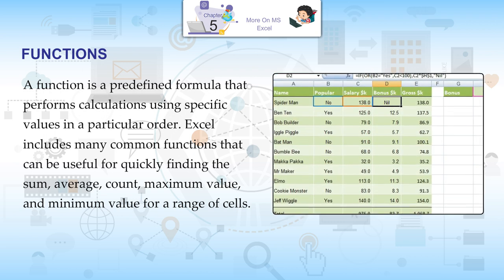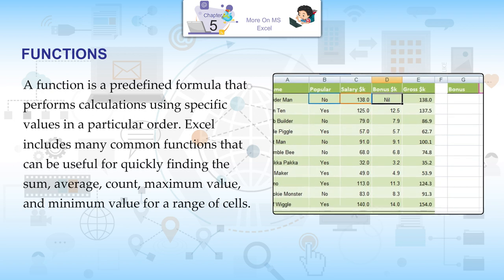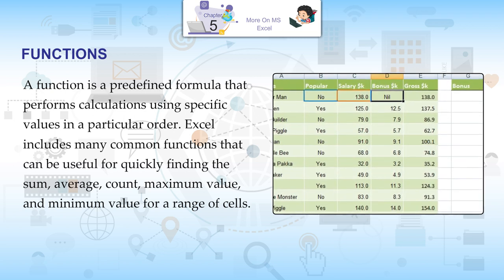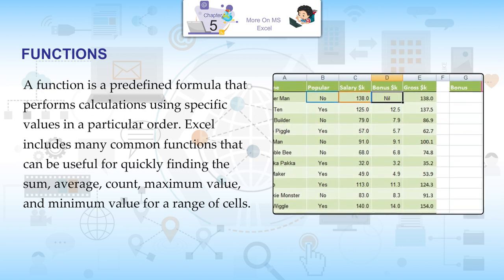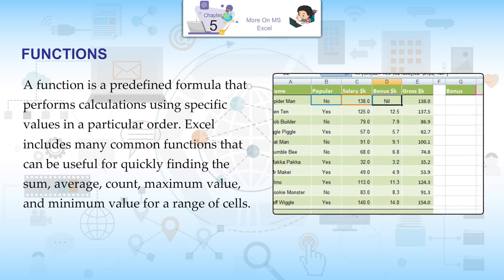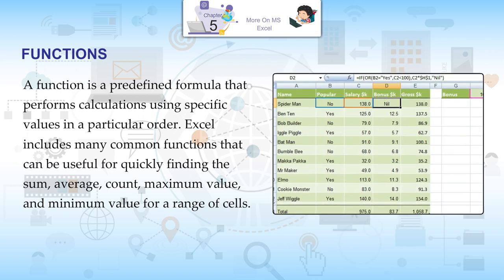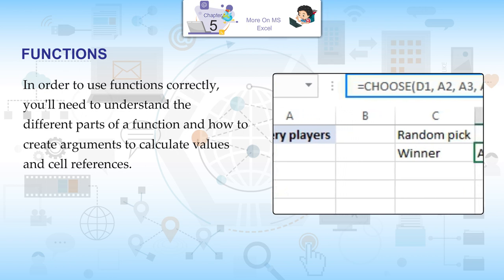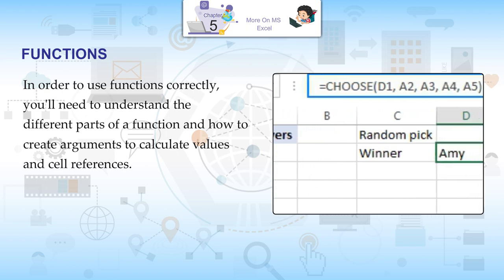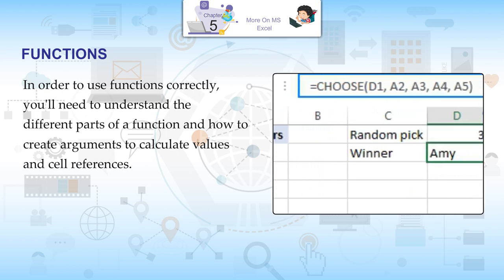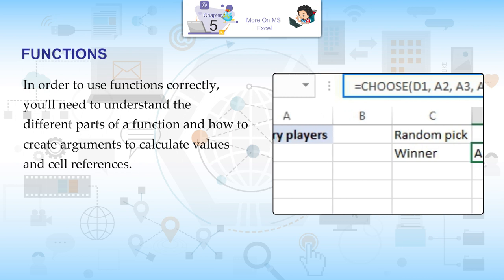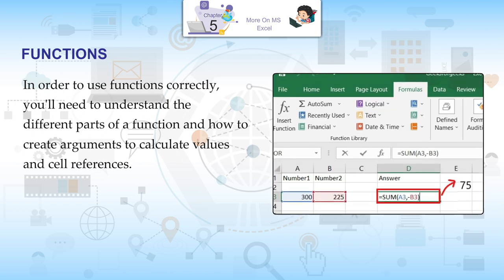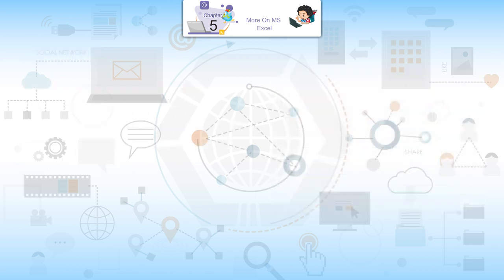Excel includes many common functions that can be useful for quickly finding the sum, average, count, maximum value, and minimum value for a range of cells. In order to use functions correctly, you will need to understand the different parts of a function and how to create arguments to calculate values and cell references.